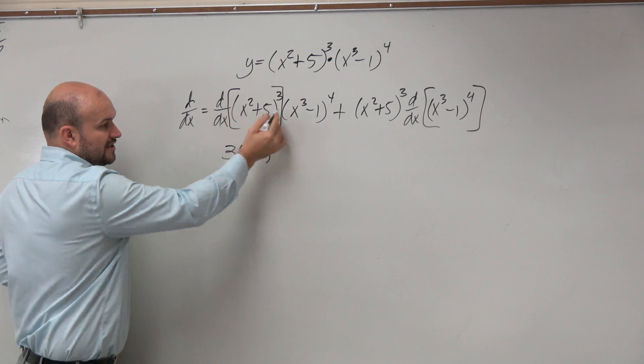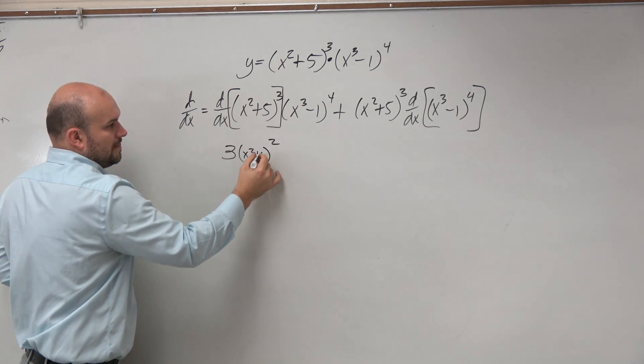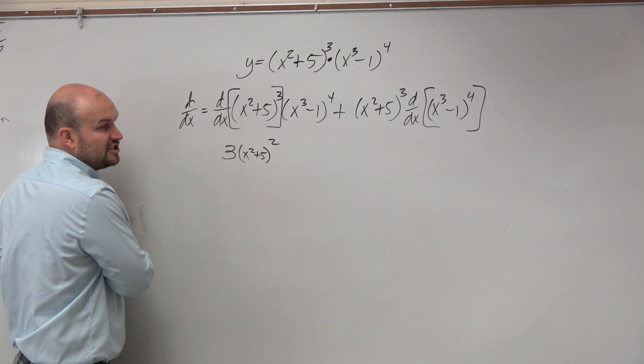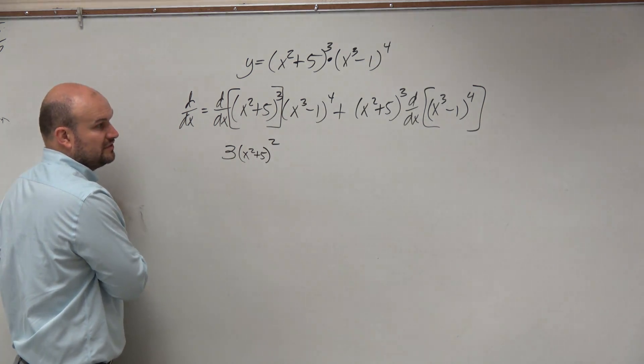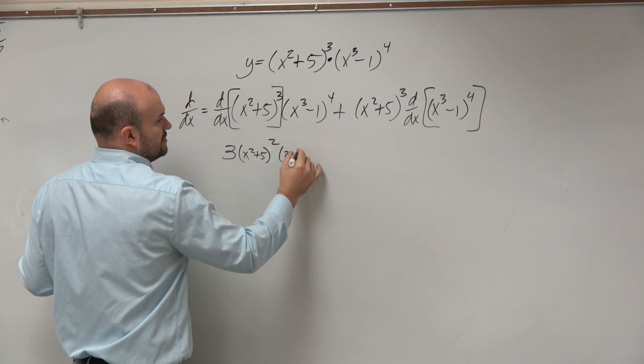And then you re-put in the child function, and then you multiply it by the derivative of the child function, which is 2x.